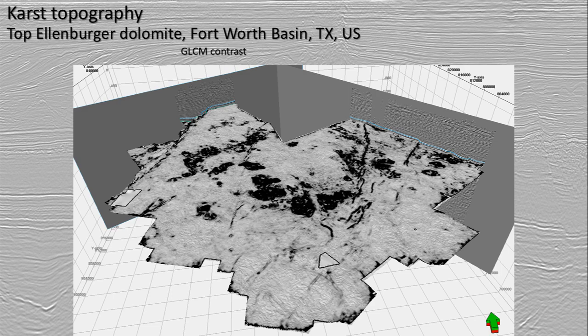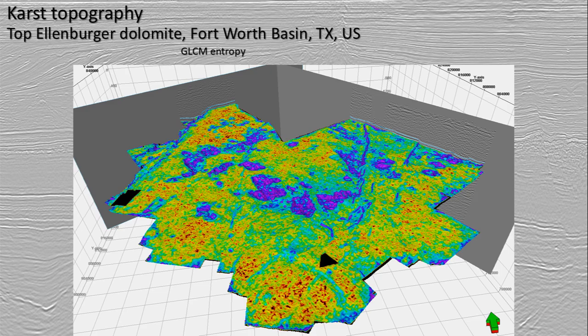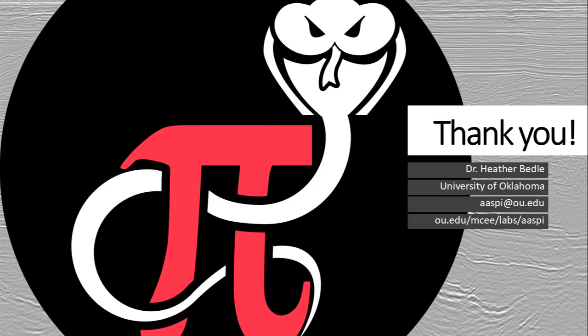All of these texture attributes measure something a little bit different, and we have tons of information about this on our website. And finally, we've got the GLCM entropy, showing how much things are changing between one pixel to the next. Hopefully you picked up on a few new attributes to try for your karstic systems. There's detailed information about all of them on the ASPIES website. Thanks for listening.